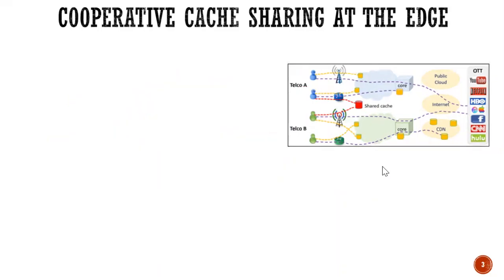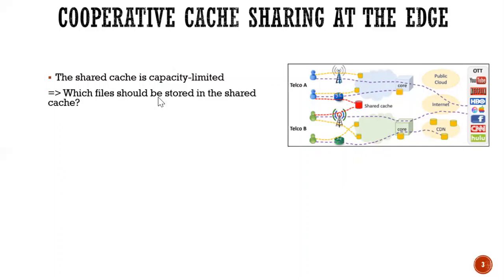As you know, the shared cache is capacity-limited. The main question is which files should be stored in cache?